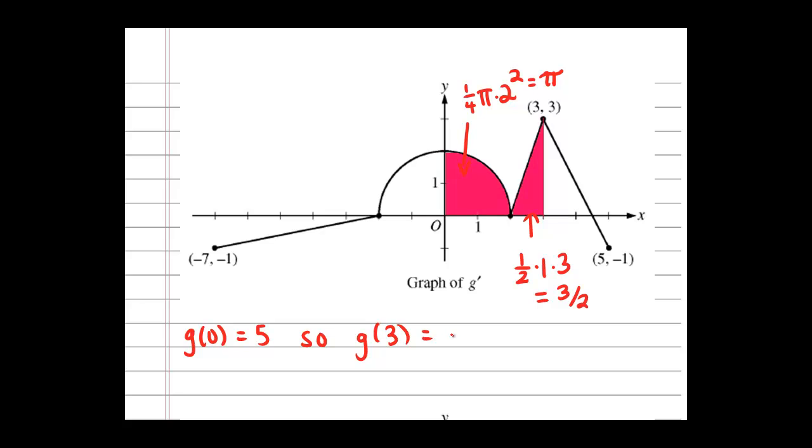And the area representing that pink triangle is 3 halves. So to calculate my value for g of 3, I need to know where we start at for the g graph. So g of 0 is 5, therefore g of 3 is g of 0 plus the change in height of the g graph from 0 to 3. In other words, where I start, which is the height of 5, and then the area that's accumulated under this graph from 0 to 3, representing the change in height of the g function.